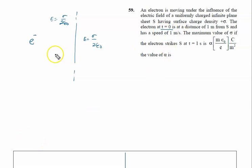The electron at t equal to 0 is at a distance 1 meter from the sheet. Let's say this coordinate is 0,0. So, coordinate of this point is minus 1, 0.